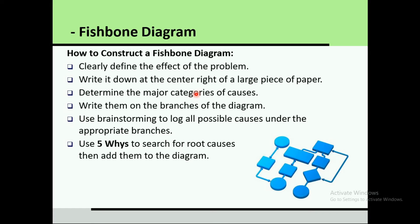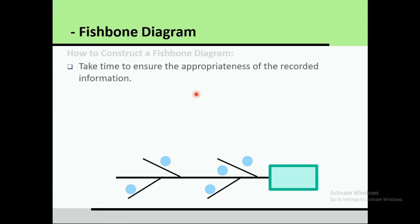The Five Whys is another tool in total quality management used to identify the root cause of a specific problem. You ask 'why' five times. For example, if products are defective, ask why — the machine is not working properly. Ask why again — there was no preventive maintenance. Ask why — no preventive maintenance was scheduled. After asking five questions, you reach the root cause.